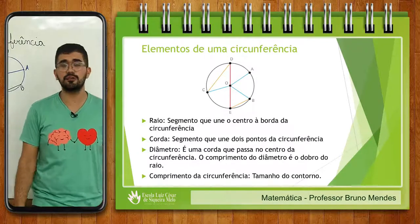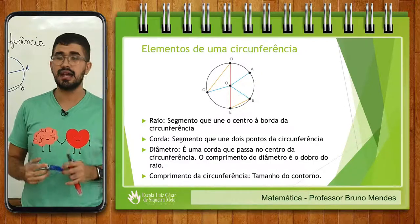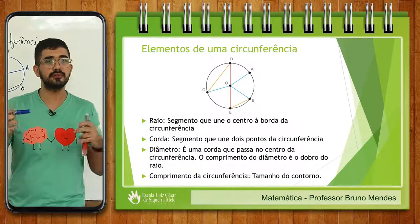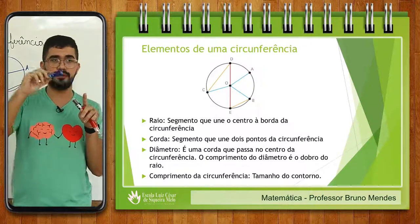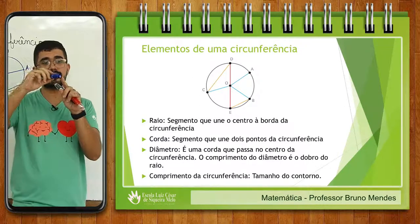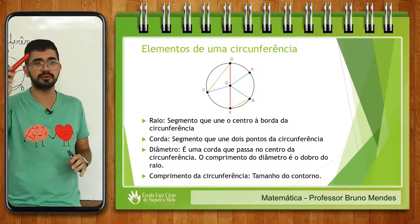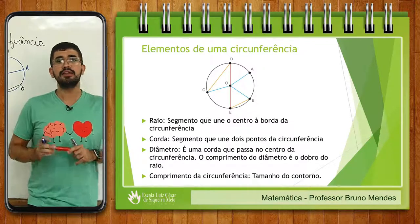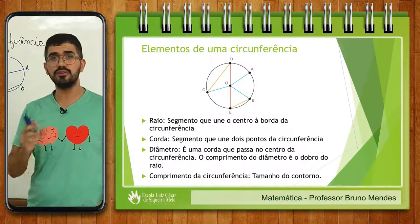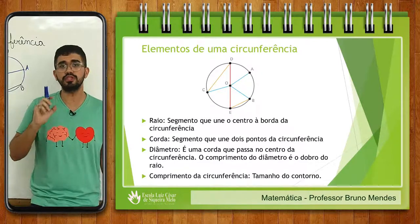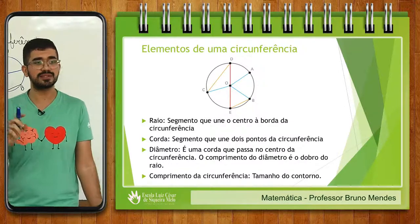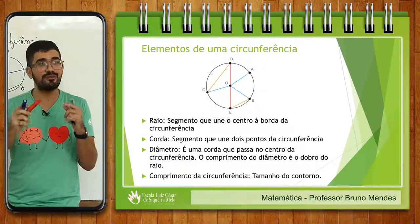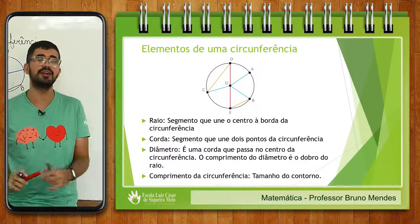O outro elemento que nós temos é a corda. O que é uma corda de uma circunferência? A corda é um segmento que une dois pontos quaisquer da circunferência. Quando eu tenho a ligação do ponto C com o ponto D — veja aí no vídeo em amarelo — esse segmento que liga dois pontos quaisquer da circunferência nós chamamos de corda. Depois nós temos o diâmetro. O diâmetro também é um tipo de corda, porém essa corda passa no centro da circunferência.